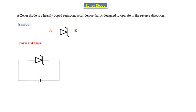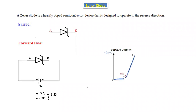In the forward bias condition, the characteristics are the same as a PN junction diode. When the positive terminal is connected to the anode (P-side) and the negative terminal is connected to the cathode, the Zener diode is in forward bias condition. Up to the cut-in voltage there is no conduction; after this voltage it starts conducting.